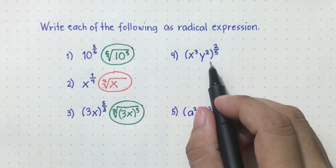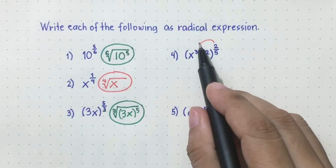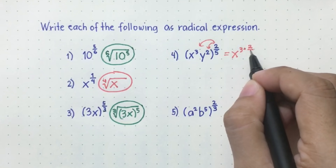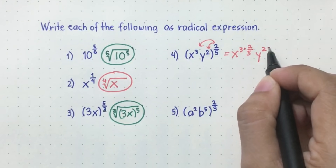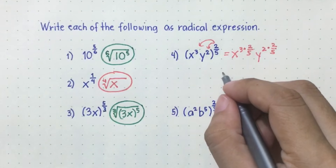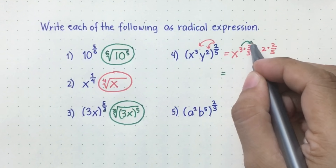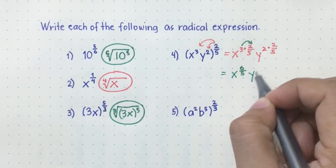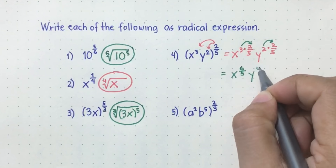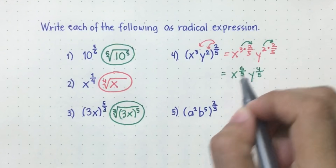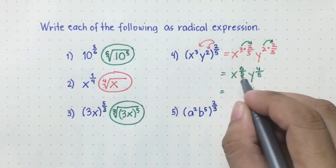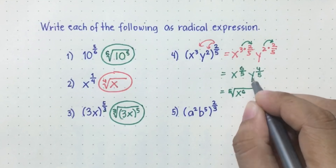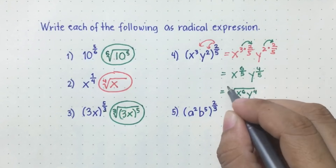How about this one? Before we can convert this into a radical expression, let us distribute this exponent first. So that will be x cubed times the exponent outside, which is two over five, then y squared times the exponent outside, two over five. Then simplify: multiply three by the numerator two to get x raised to six over five, and copy the denominator five. Then for y, multiply two and two to get four, with denominator five. Now we can convert this to radical expression: the index will be five, x will have an exponent of six, and y will have an exponent of four.